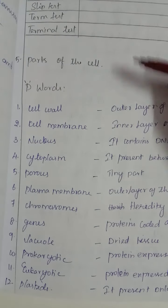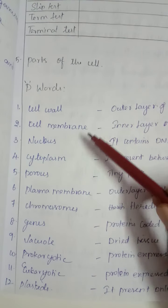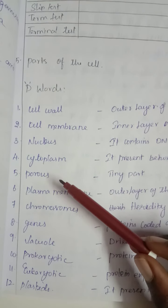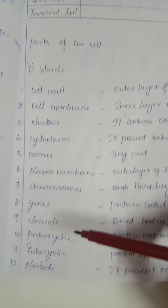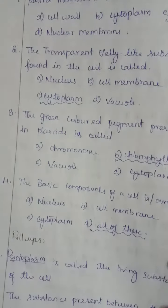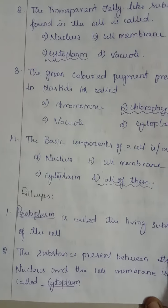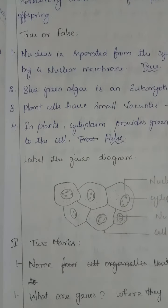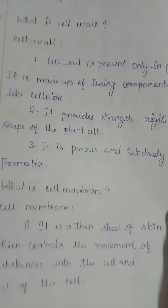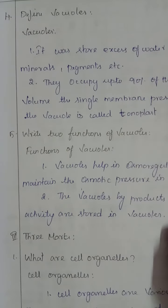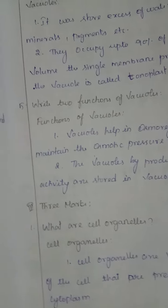For today's homework, learn the following keywords: cell wall, cell membrane, nucleus, cytoplasm, porous, plasma membrane, chromosomes, genes, vacuole, prokaryotic, eukaryotic, and plastids. For exercises: one mark questions — four choose, two fill-ups, four true/false; diagram — two marks; short answer questions — what is cell wall, what is cell membrane, define vacuoles, write two functions of vacuole; three marks — what are cell organelles. That's all for today. Correct your homework. Thank you.